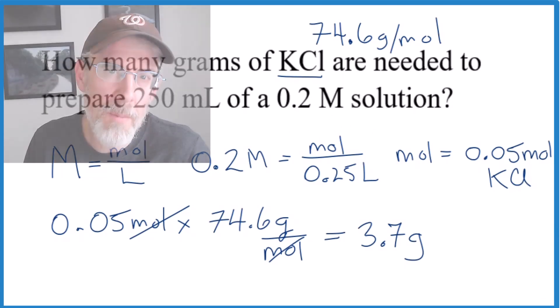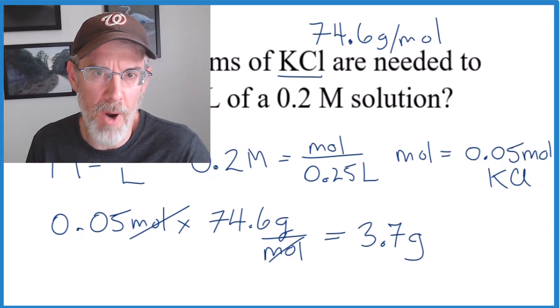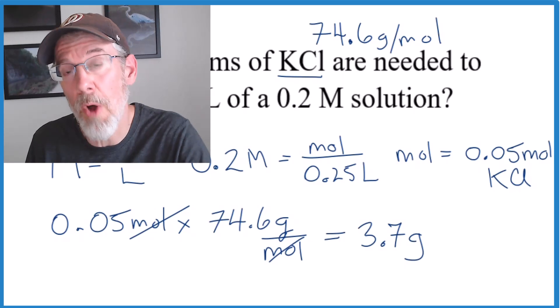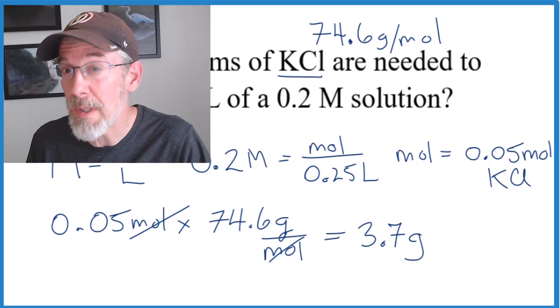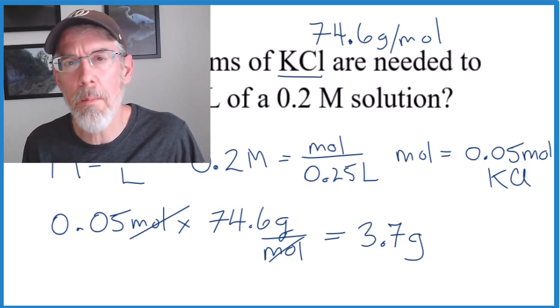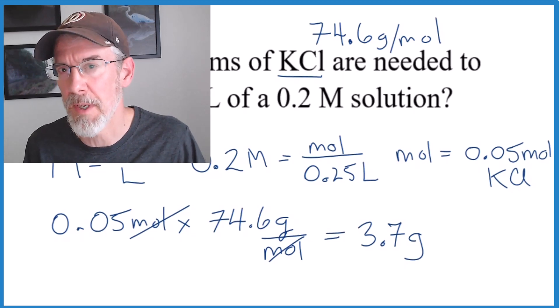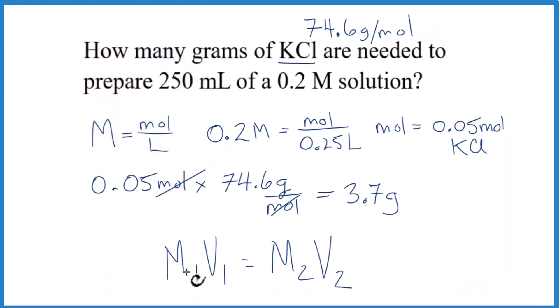And these are the most common types of molarity problems that you'll see in chemistry. If you can do all the problems in this video, you're in really good shape. There is one more type that I'll cover in a different video. That's dilutions. M1 V1 equals M2 V2. We'll go over that in another video. This is Dr. B. Thanks for watching.